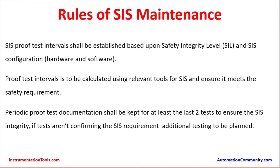SIS proof test intervals shall be established based on Safety Integrity Level (SIL) and SIS configuration — hardware and software. This covers configurations such as 1oo1, 1oo2, 2oo2, and 2oo3. Proof test intervals are arrived at based on the SIL, calculated by safety system experts. Proof test intervals are to be calculated using relevant tools and must ensure the safety requirements are met. Different tools are available from international agencies for these SIL calculations.